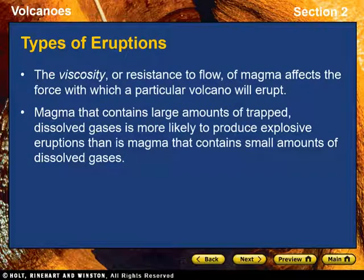Types of eruptions. The viscosity, or resistance to flow, of magma affects the force with which a particular volcano will erupt. The viscosity of magma is determined by the magma's composition. Because mafic magmas produce runny lava that has very low viscosity, they typically cause quiet eruptions. Because felsic magmas produce sticky lava that has a high viscosity, they typically cause explosive eruptions. Magma that contains large amounts of trapped dissolved gases is more likely to produce explosive eruptions than magma that contains small amounts of dissolved gases.